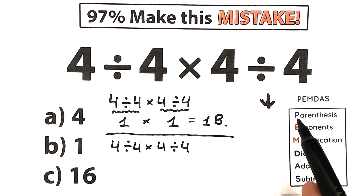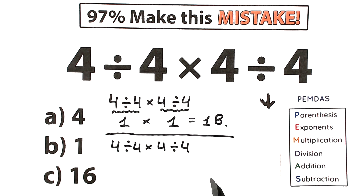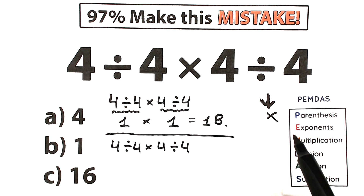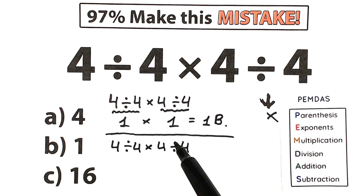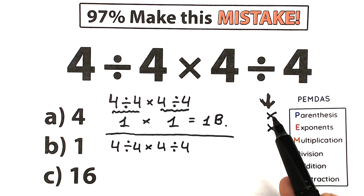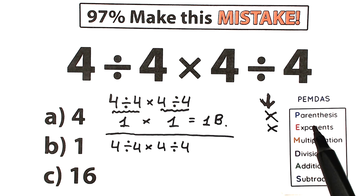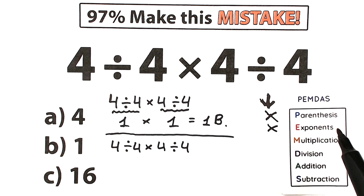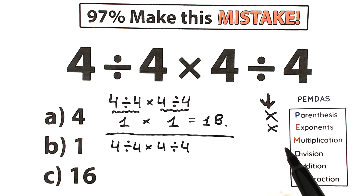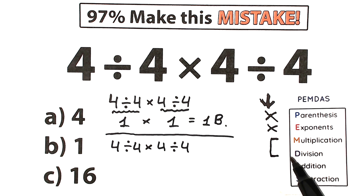The first step is parentheses, but we don't have any parentheses here, so we skip it. The next step is exponents — we don't have any of those either, so we skip that too. Now we reach the multiplication and division group, which is one combined group in math. We need to find where we have multiplication and division signs.